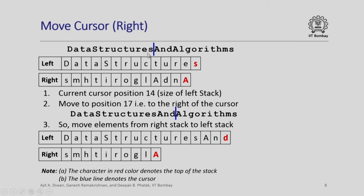Suppose I want to move the cursor right — the cursor is currently at position 14 and I want to move it to position 17. All I need to do is move 3 characters (positions 15, 16, and 17) from the right stack to the left stack. After this move, my stacks will look accordingly with the cursor now at position 17.